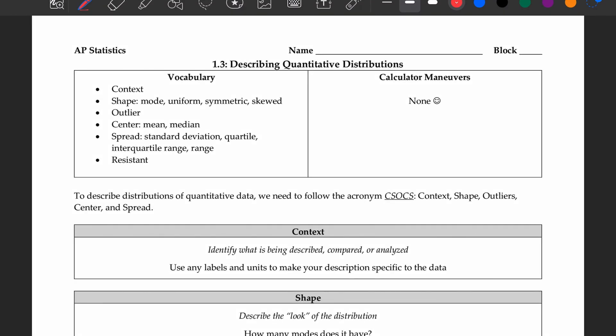Hello and welcome to video 1.3, where we're going to be describing quantitative distributions. Vocab covered here are the things you'll be thinking about to describe: context, shape, outlier, center, spread, and resistant. No calculator maneuvers today because this video focuses on describing displays using the new vocab, not finding these actual metrics. But I will show you on the formula sheet where you can see these formulas, just in case you're interested.